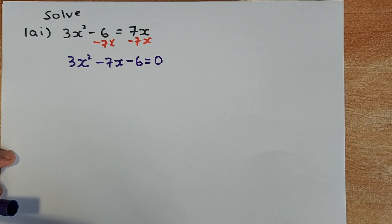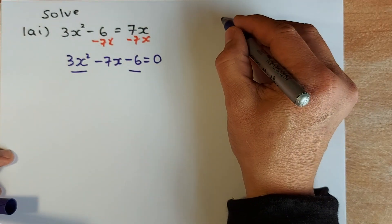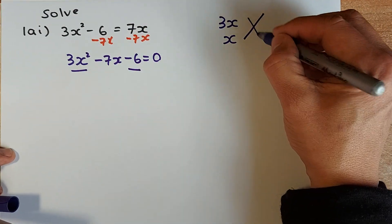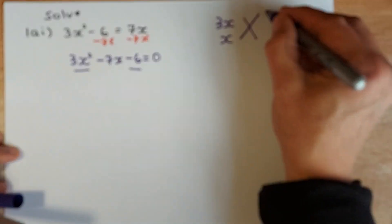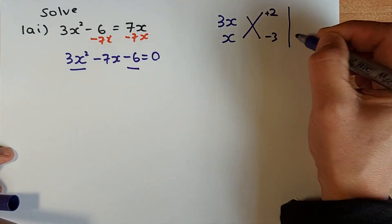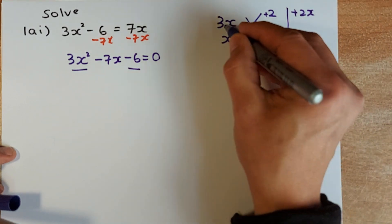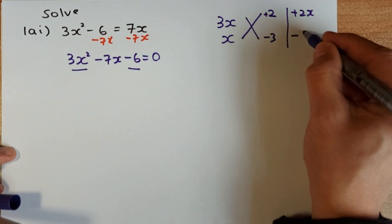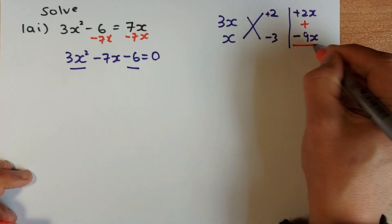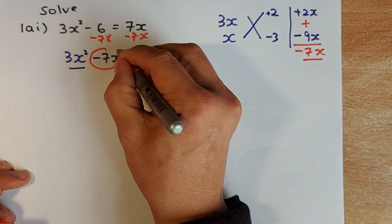The next step is to factorize that equation using the trial and error method. 3x squared is made up of 3x and x. And for minus 6, there are many possibilities — we try 2 and negative 3. When you cross-multiply them: x times 2 is plus 2x, and 3x times minus 3 is minus 9x. If you add them together, the answer is negative 7x, which is what we want in the middle of the equation.